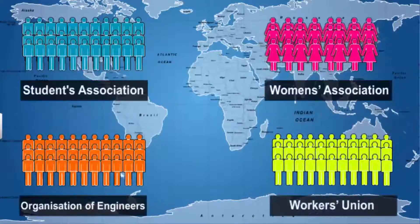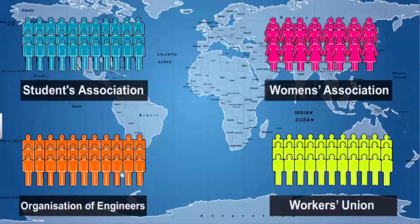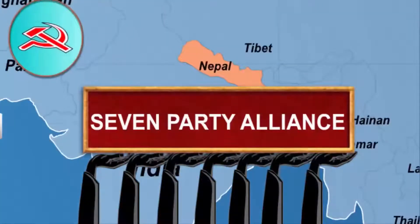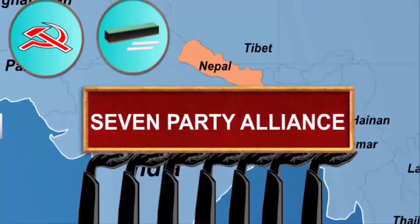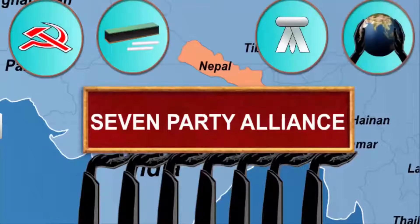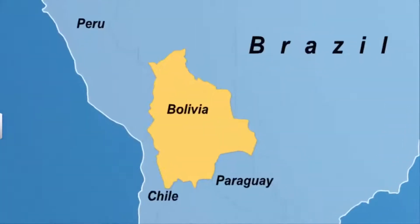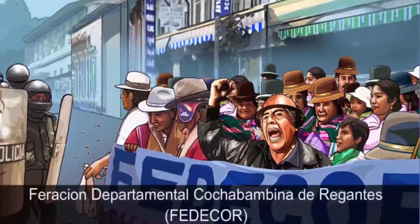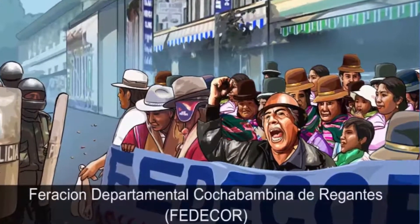In both Nepal and Bolivia, we can see that the various organizations that took part in the struggle were not led by any political party but by an organization of common people from different walks of life. The SPA in Nepal included major labor unions and their federation, and organizations of people such as teachers, lawyers and human rights groups. Whereas in Bolivia, the struggle against water privatization was led by an organization called Federcor.